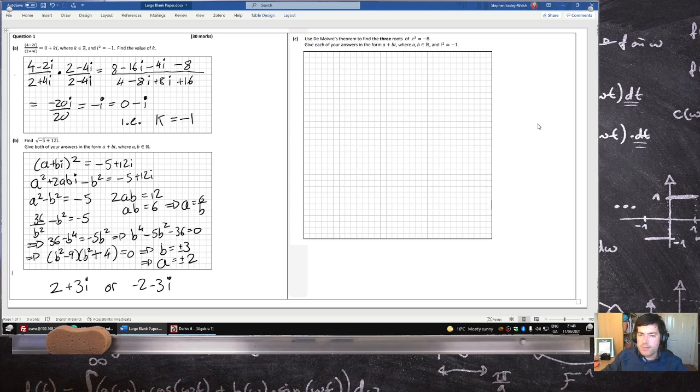De Moivre's theorem, so it's just straightforward. There's actually other ways to do it than using De Moivre's theorem, but anyways, z cubed equals minus 8. Minus 8 as a general polar form would be 8 times, well, minus 8 would be here, so the theta is 180 degrees. So that's cos 180, but it's in general polar form, so that's plus 360n plus i sine 180 plus 360n.